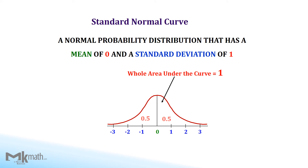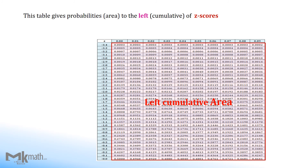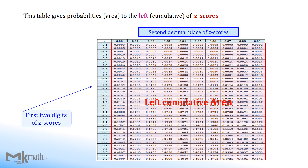Before looking at the actual examples, you need to know the basic knowledge about the standard normal distribution. It has a mean of 0 and a standard deviation of 1. This z-table gives the area or probability to the left of z-scores. The first column shows the first two digits of z-scores and the top row shows the second decimal place of z-scores.